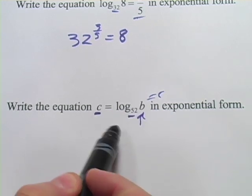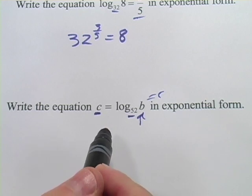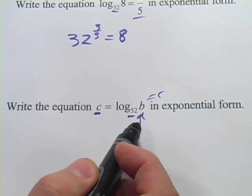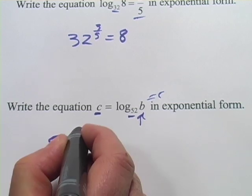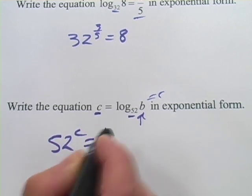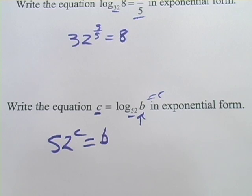Of course, they plug in C and B instead of numbers here, so maybe that's a little confusing too. But we'll handle it the same way. This is going to be 52 raised to the power of C equals B. So that's a little bit about writing logarithmic equations in exponential form.